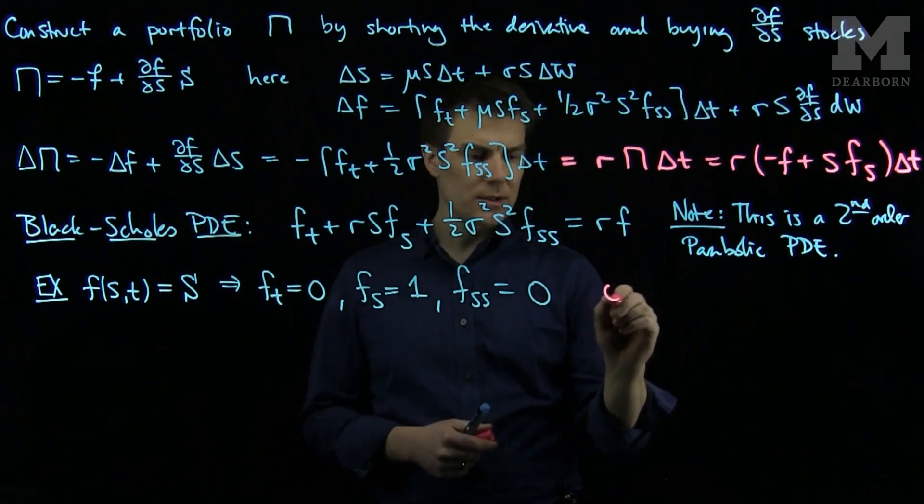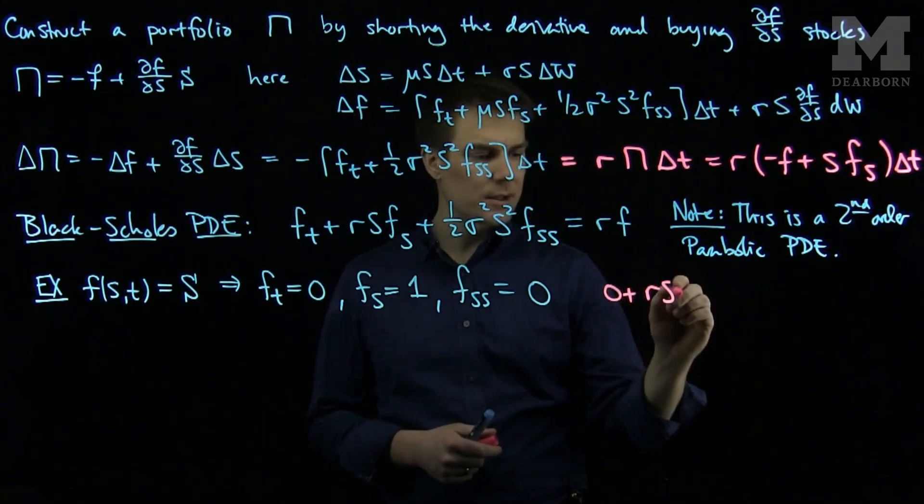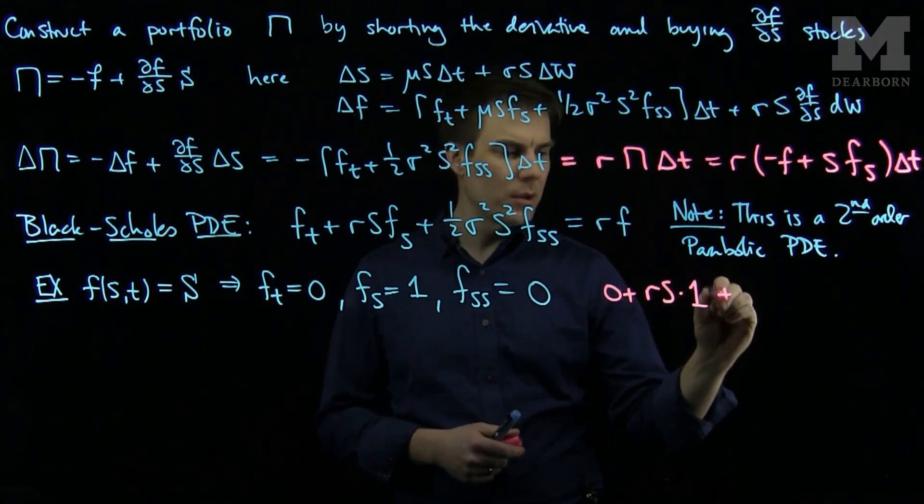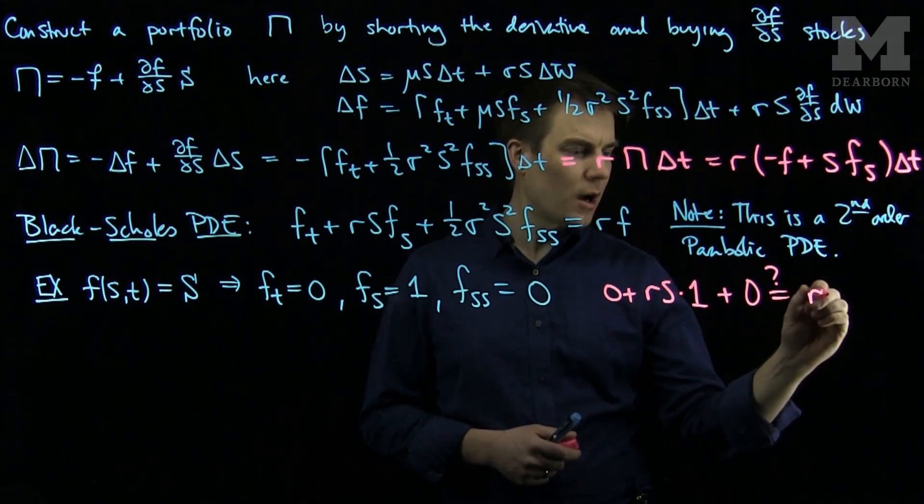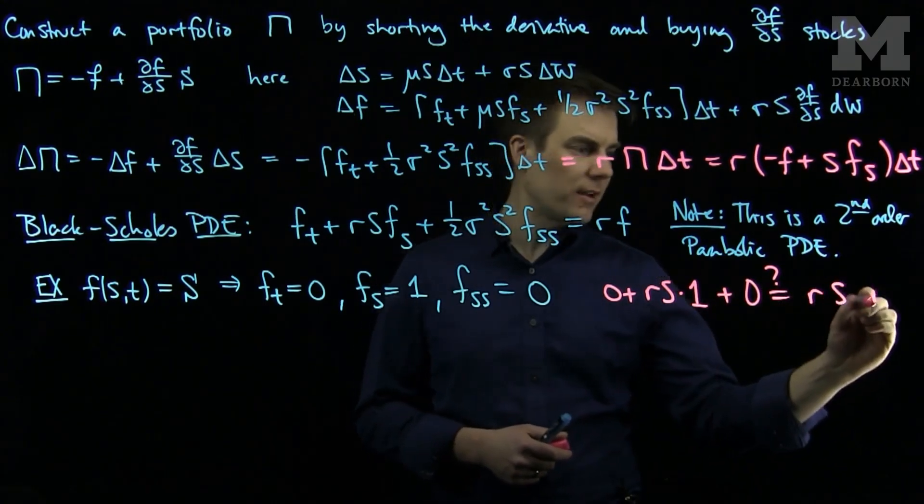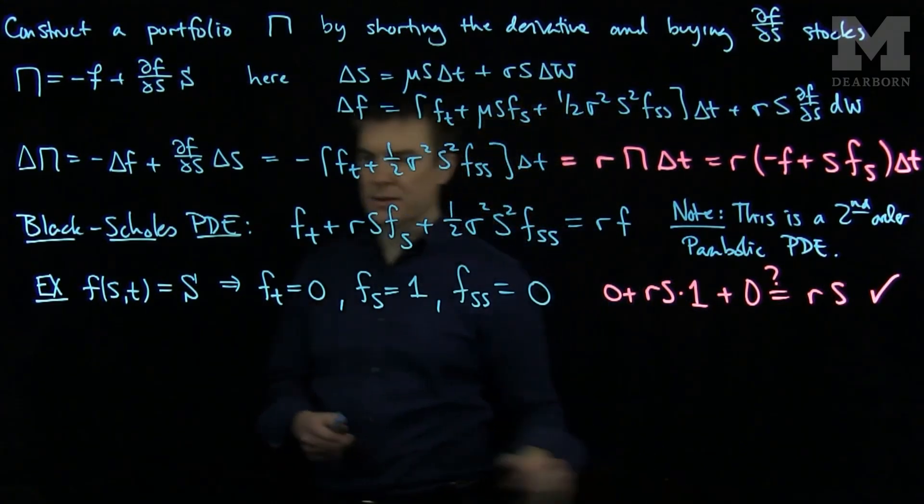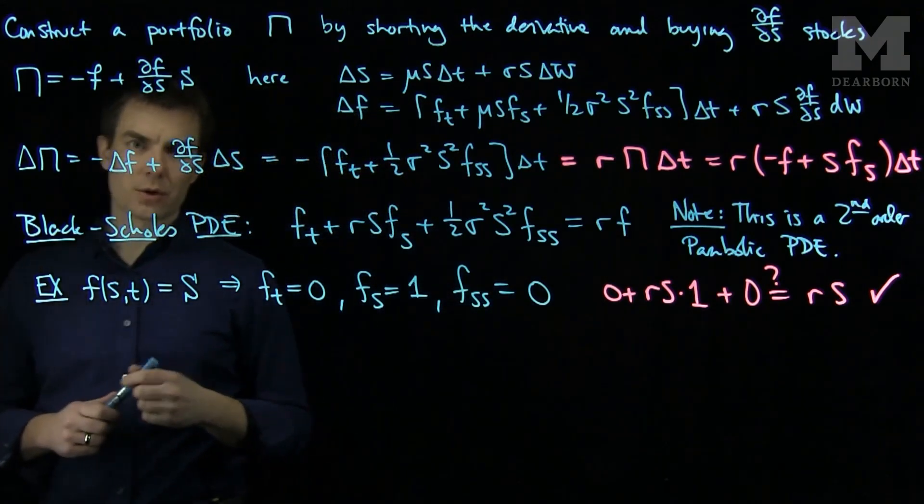So if we plug this into the equation, we see zero plus rs times one plus zero is equal to r times s. And we see that, in fact, that's true. So the function f(s,t) which is s,